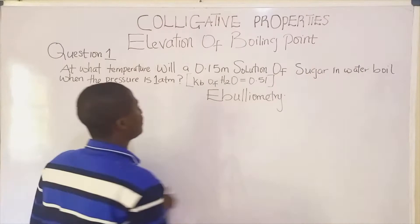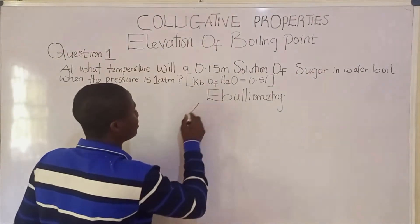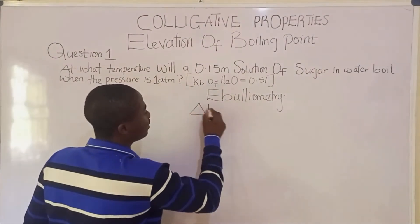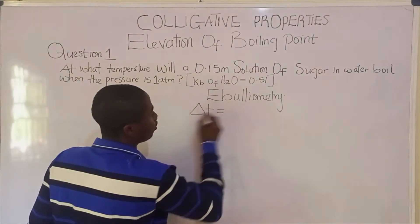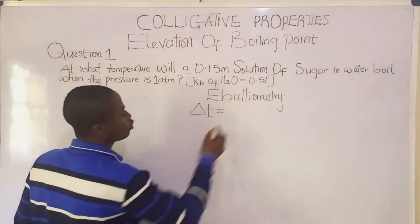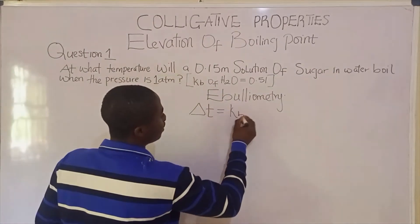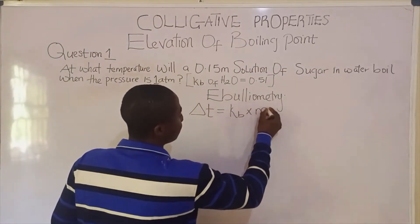What is the formula? It is simply delta T, which is the change in temperature, is equal to KB times m.